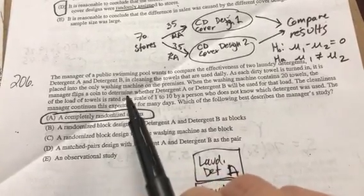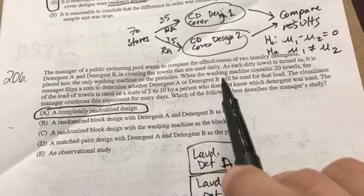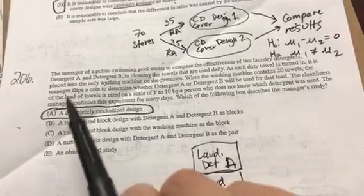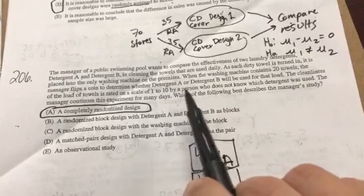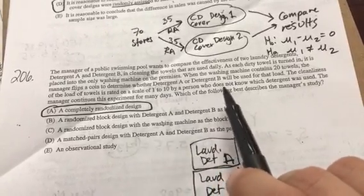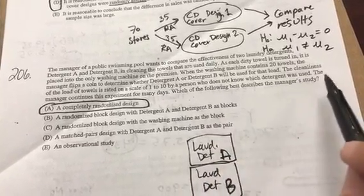A and B are used in cleaning the towels on a daily basis. As each dirty towel is turned in, it's placed into a washing machine. When the washing machine gets up to 20 towels, the manager flips a coin to determine whether detergent A or B will be used for that load.